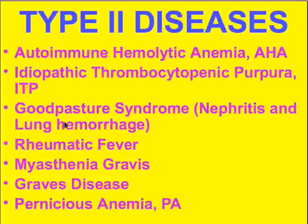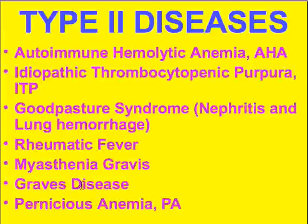In Goodpasture syndrome we have antibodies attacking type four collagen of the glomerular basement membrane, causing nephritis or renal failure, as well as targeting antigens in the lung. In rheumatic fever, myasthenia gravis, Graves' disease, and pernicious anemia — these are all clear-cut examples of antibodies attacking the body's own tissue, whether it's muscle, elements of the thyroid gland, or the body's intrinsic factor, resulting in malabsorption or no absorption of vitamin B12.